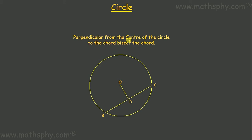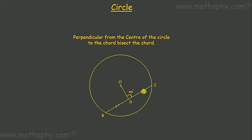The next theorem: perpendicular from the center of the circle to the chord bisects the chord. We have a circle with center O and chord BC. If we draw a perpendicular from the center O to chord BC — that perpendicular is 90 degrees — then BD will be equal to DC, meaning the chord is bisected.